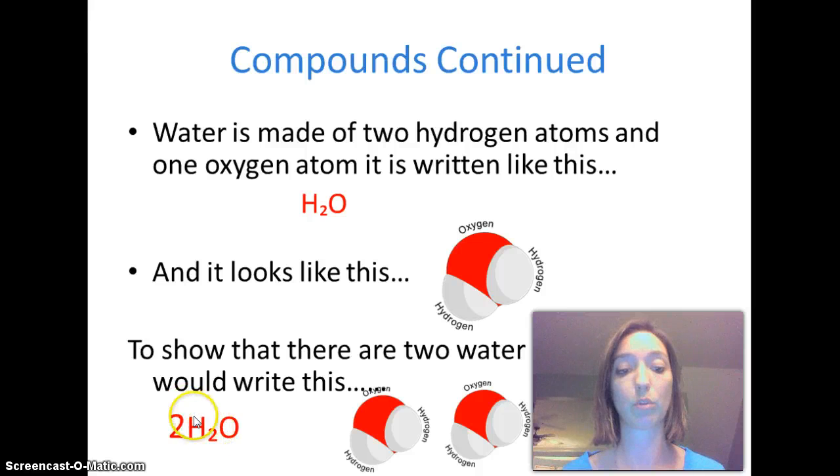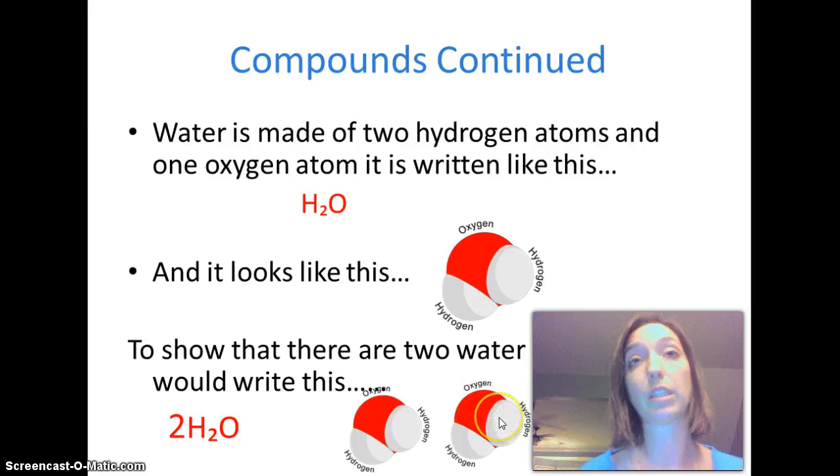we're going to distribute this number two. So to figure out how many atoms we have, you take the two here and you multiply it by that two, which gives us four. One, two, three, four. And then you take the two here and you multiply it by that one, which we didn't write, and we have two oxygen. So we're going to need to know this when we start getting into some formulas and we have more numbers and more different types of compounds.